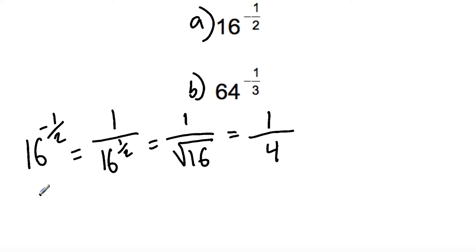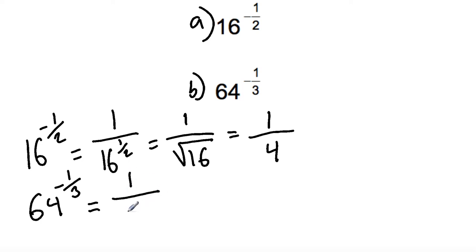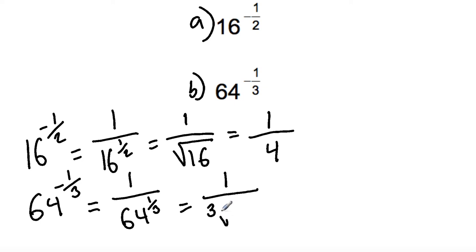Question 5b: 64 raised to the power of negative one third. Again, whenever the power is raised to a negative, the answer is 1 over 64 raised to the power of one third, which can be written as 1 over the cube root of 64. The cube root of 64 is 4, so the answer is 1 over 4.